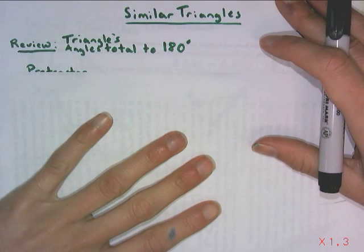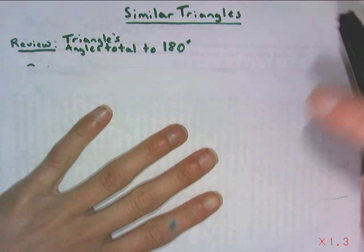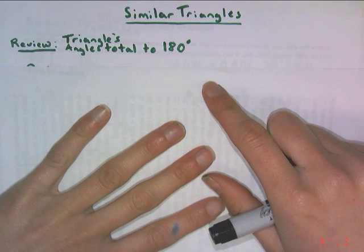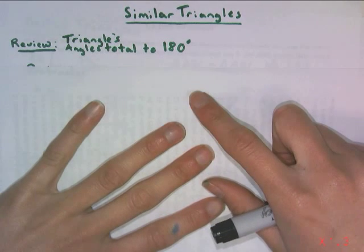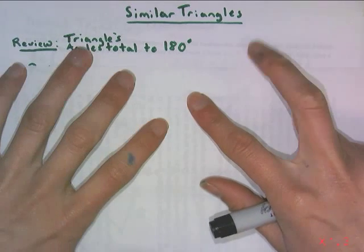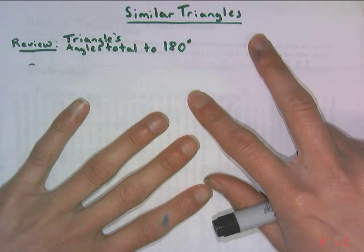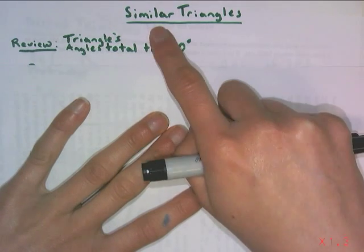Last time we talked about some characteristics that have to be true in order to conclude that shapes are similar. One is that it has to have the same shape. Another is that each corresponding angle has to be congruent, and the side lengths are proportional. So if all three conditions are met, we can say they're similar.